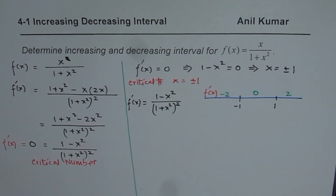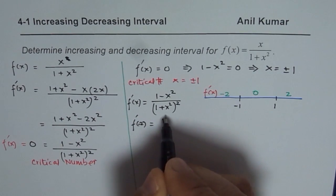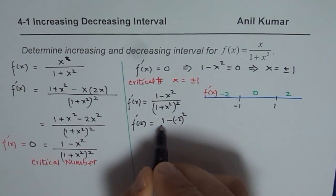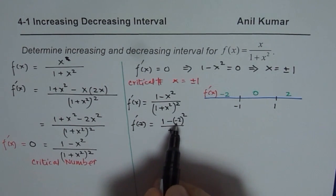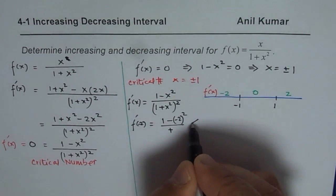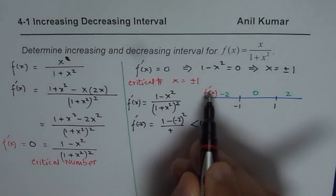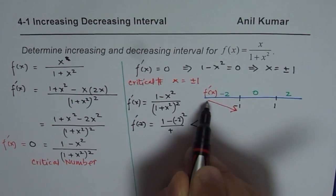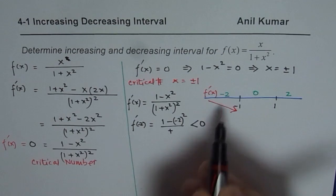Testing x = −2: substituting into the numerator gives 1 − (−2)² = 1 − 4, which is negative. So f'(−2) < 0. Since the derivative is negative, the slope is going downwards — this gives us a decreasing interval on (−∞, −1).